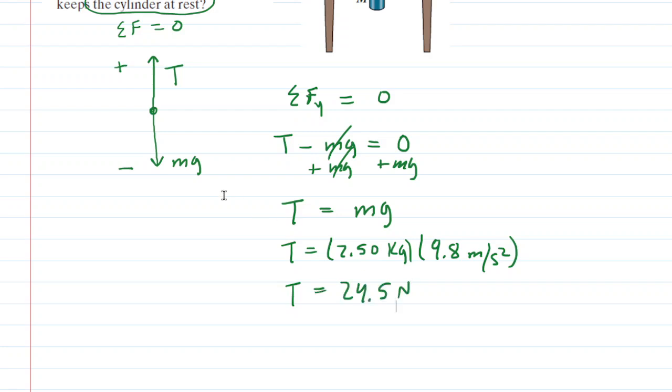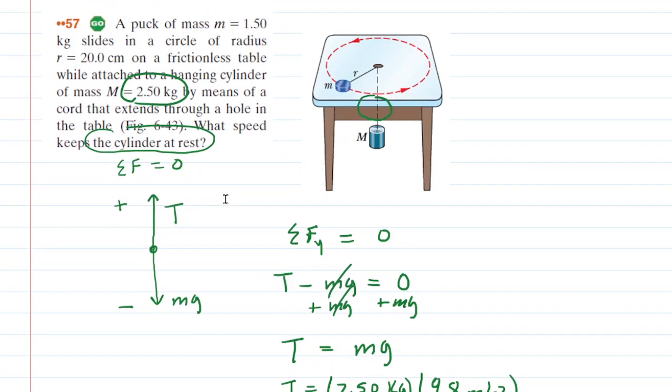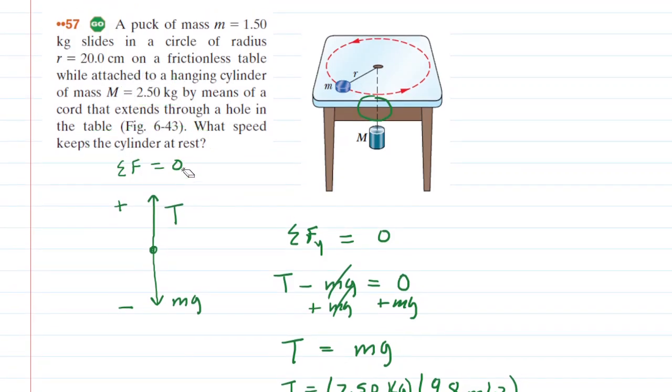That is the tension in the string, but let's go back to the picture and see how that helps us. We have this puck attached to that string, spinning around in uniform circular motion. Because it's spinning in uniform circular motion, we know that the centripetal force acting on the puck has to equal its mass times its speed squared divided by the radius.